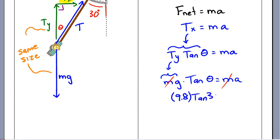We can just go 9.8 times the tan, in this case, of 30 degrees is equal to the A. And it looks like the acceleration here is 5.65 meters per second squared.